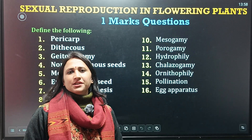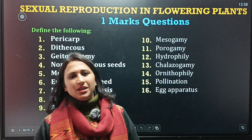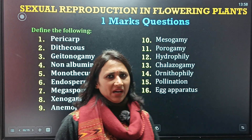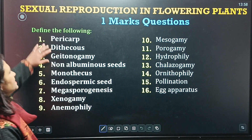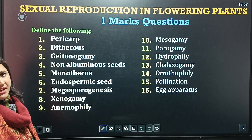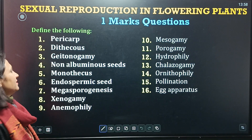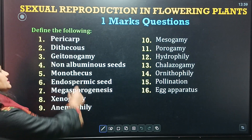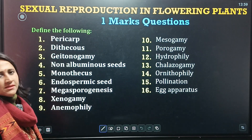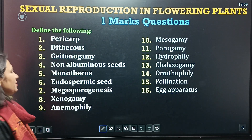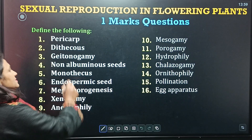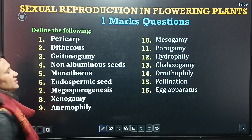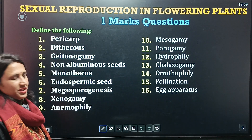There are some defining terms which carry one mark each. The first term is Perica. The second is Dioecious. Third is our palms, Geitonogamy. Fourth is Non-albuminous seed. Next term is Monothecus.